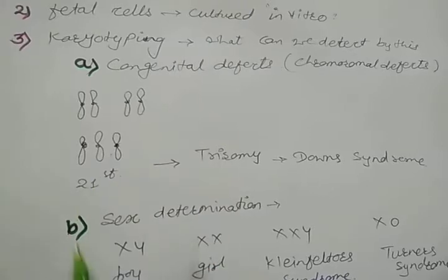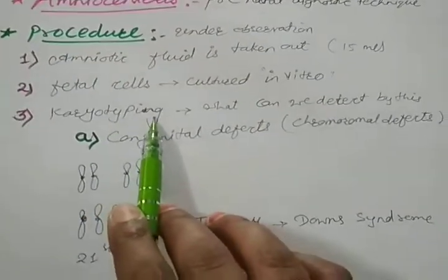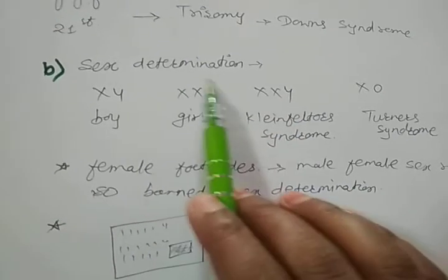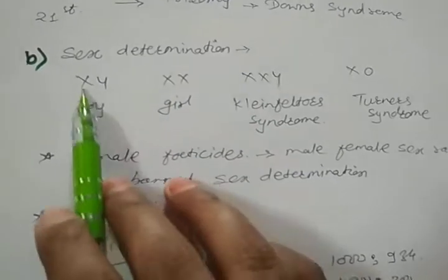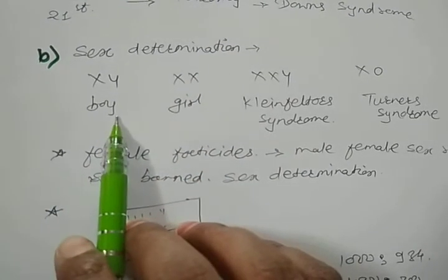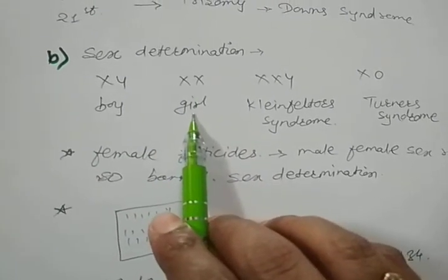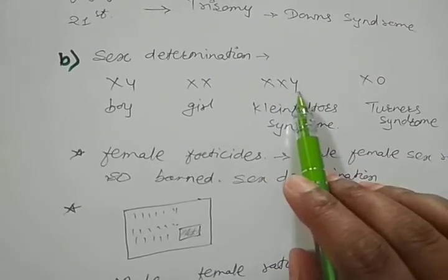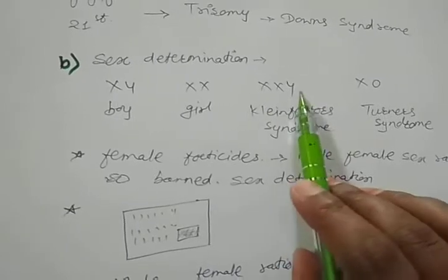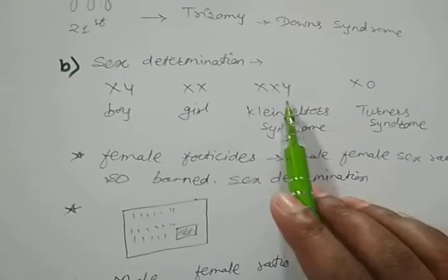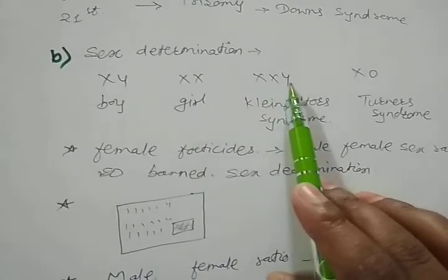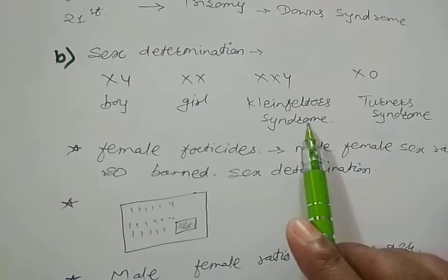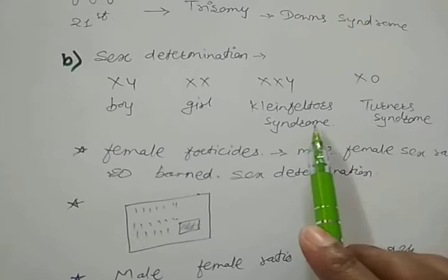The 21st chromosome is related to Down syndrome. The second thing is that we can also use this karyotyping technique for sex determination. As we know, if XY chromosomes are there the baby will be a boy, and if XX chromosomes are there the baby will be a girl. But in some conditions there is an extra chromosome — for example XXY — meaning an extra sex chromosome is present, and that baby is suffering from Klinefelter syndrome, which is a genetic disorder.